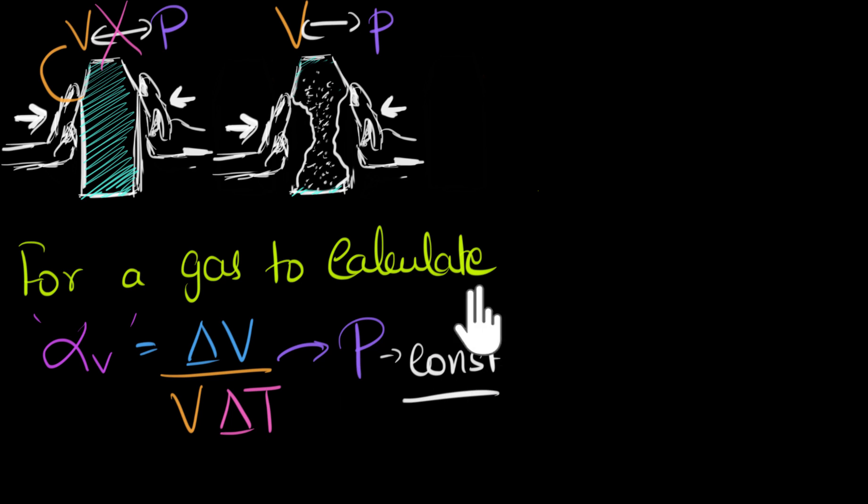Now, we didn't have to worry about this for liquids and solids, because pressure doesn't affect the volume at all. So whether you keep the pressure constant, or you don't, or you change the pressure, it wouldn't matter to us. So we didn't have to worry about pressure in the previous cases. But when it comes to gas, we have to make sure this remains constant. That's one big difference between gases and solids and liquids.